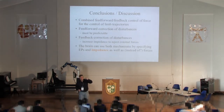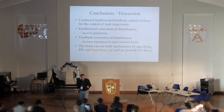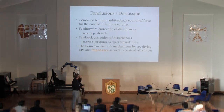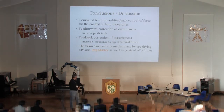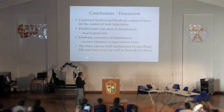To summarize: we can see how combined feed-forward and feedback control can be useful for controlling trajectories. Feed-forward correction is useful when the perturbation is predictable — as with the Coriolis force, which I could anticipate and generate a compensating motor command. When perturbations are not predictable, feedback impedance correction is important. The brain can use both mechanisms by specifying equilibrium points, virtual equilibrium points, and impedance — as well as or instead of forces — as a robust method of control.